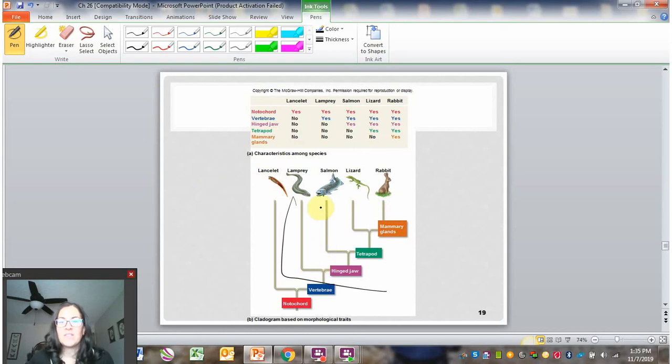Then I have a next smaller in-group. This is the in-group for hinged jaws. All three of them have hinged jaws. The lamprey and the lancelet don't, so they're the out-group now. Then I have another smaller in-group. This is an in-group for being a tetrapod. The lizard and the rabbit are both tetrapods. The lancelet, the lamprey, the salmon are now the out-group. Then the smallest in-group is for mammary glands. Only the rabbit has mammary glands.